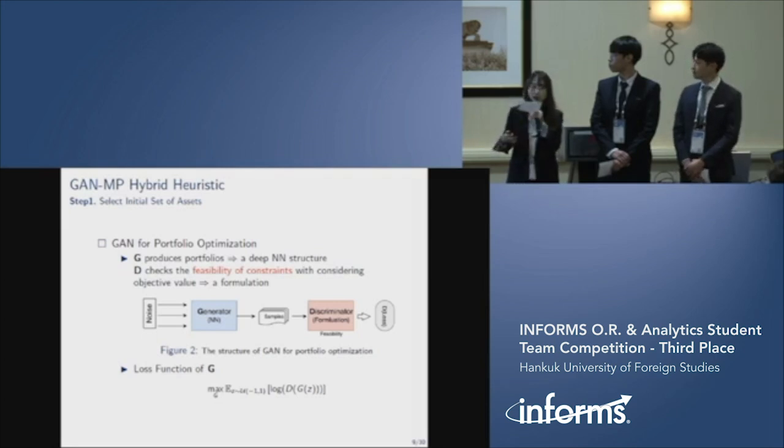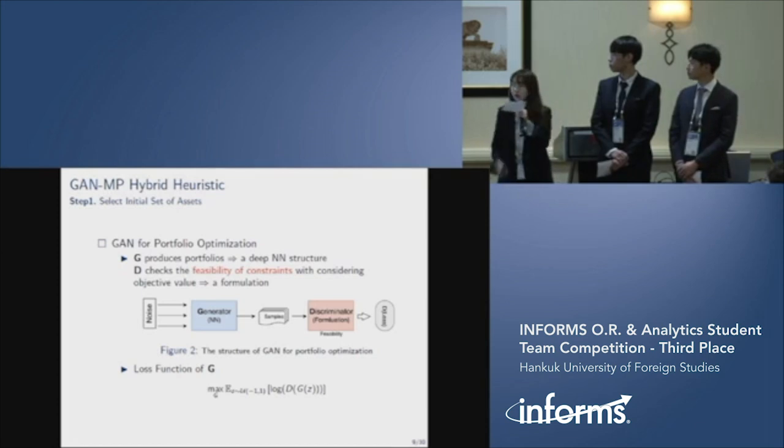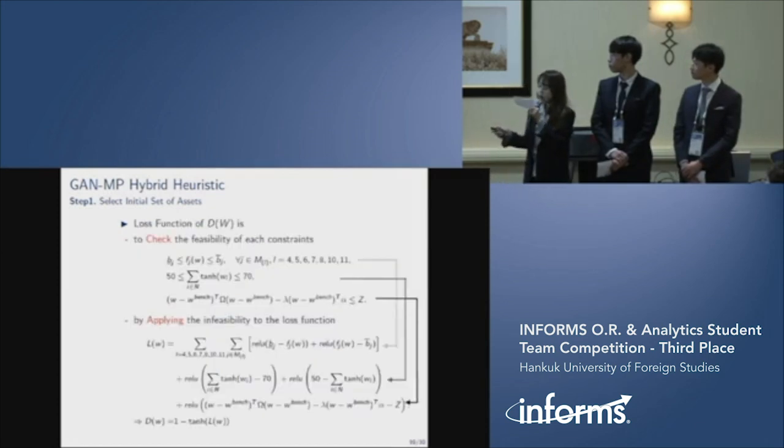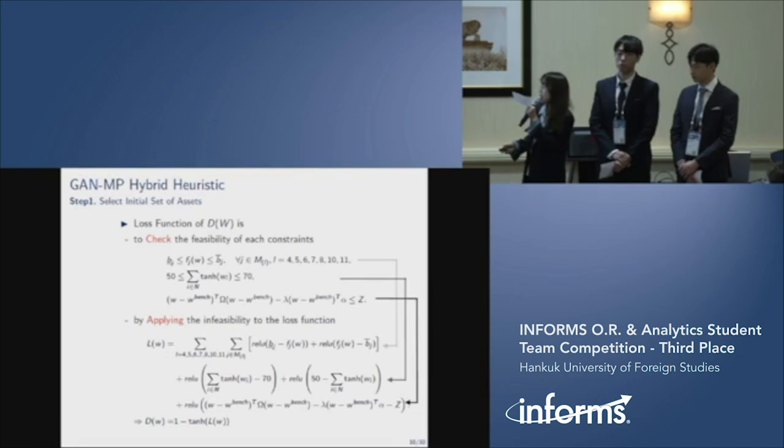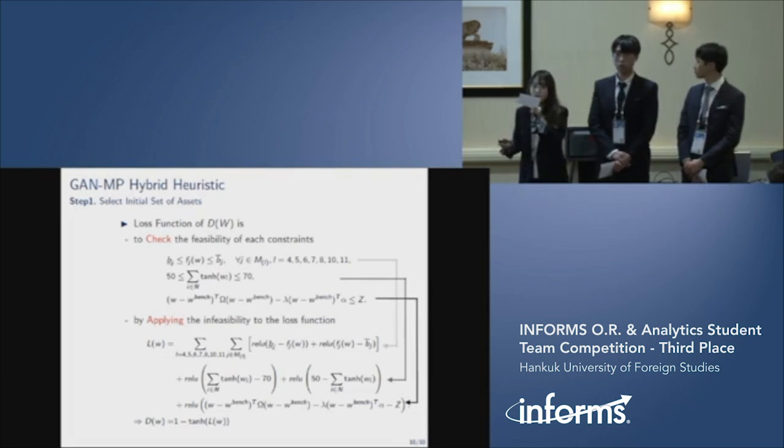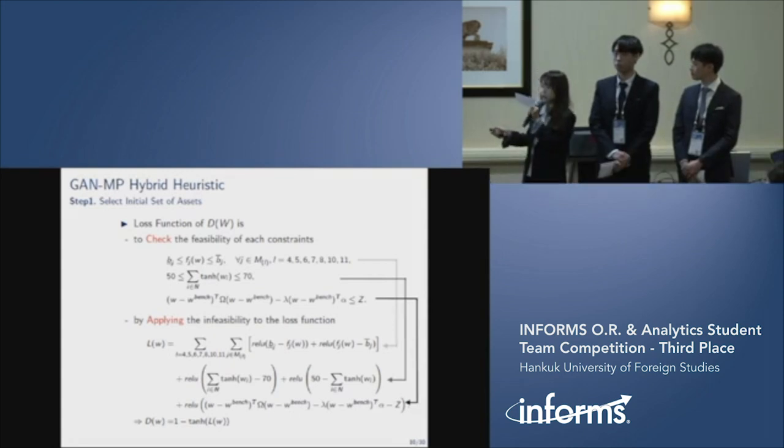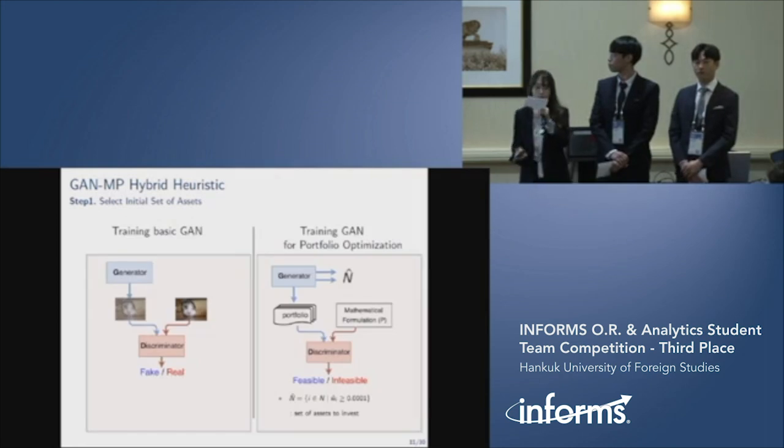Generator tries to create portfolio, while discriminator checks whether the created portfolio is feasible or not. In our loss function of discriminator, the given formulation is represented like this. First, it checks the feasibility of each constraint. If it is not feasible, the degree of violation is applied to the loss function as follows.